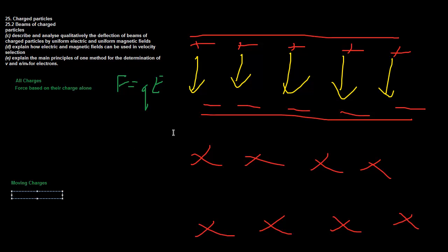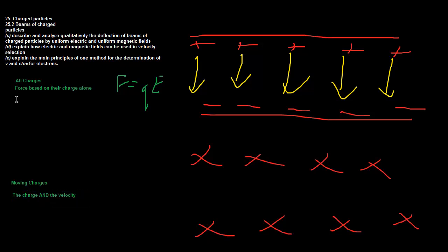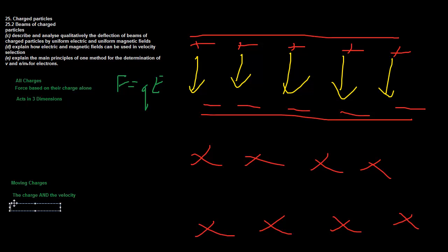In a magnetic field, the force is dependent on the charge AND the velocity of the particle - the faster the particle is moving, the greater the force applied on it. The electric field acts in three dimensions: particles, no matter how they're oriented, always experience a force in the direction of the field lines.